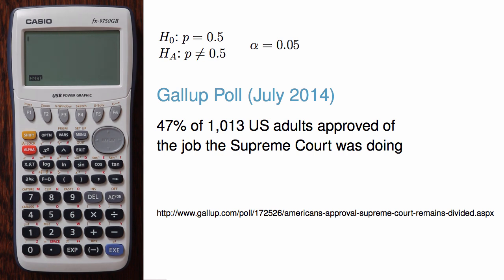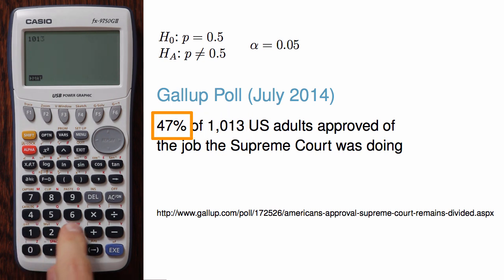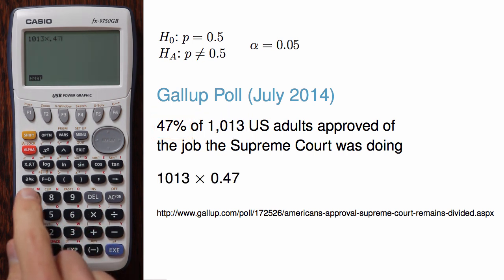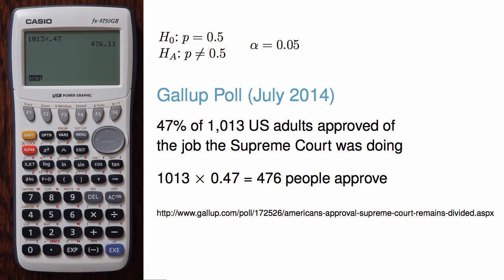Our two summaries here are the sample size of 1,013 adults and a sample proportion of 0.47, which means we had 1,013 times 0.47, or about 476 people in the sample say that they approved of the job the Supreme Court was doing. We verified the conditions for the sample are satisfied so that we can move ahead and conduct a hypothesis test.